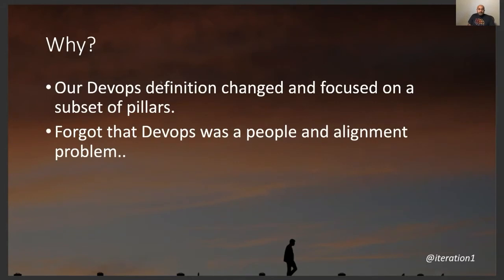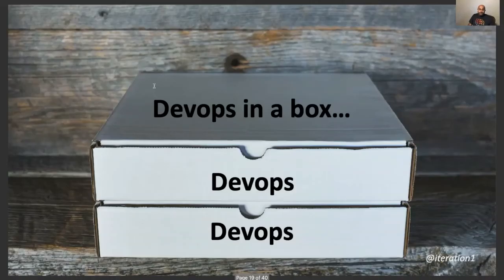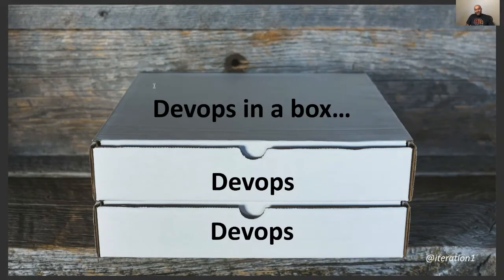To summarize: our DevOps definition has changed, and we now focus on a specific subset of the pillars. One problem we've forgotten is that the original idea of DevOps was operations and development coming together and working hand in hand — it's more of a people problem than a tooling or alignment issue. And today, most companies are trying to sell you a solution for DevOps — basically DevOps in a box.